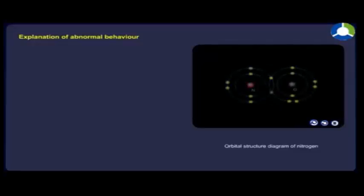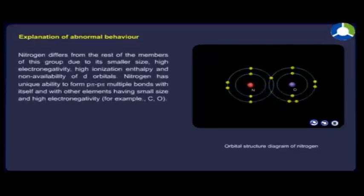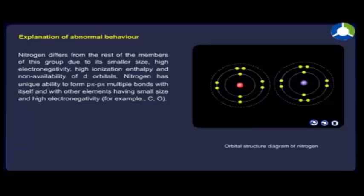Nitrogen differs from the rest of the members of this group due to its smaller size, high electronegativity, high ionization enthalpy, and non-availability of d orbitals.